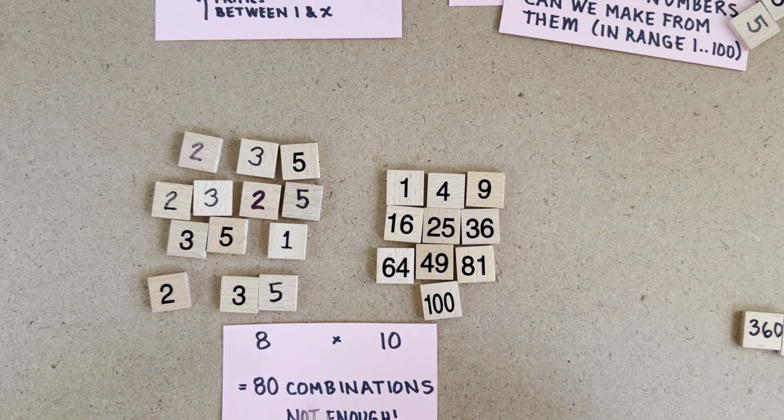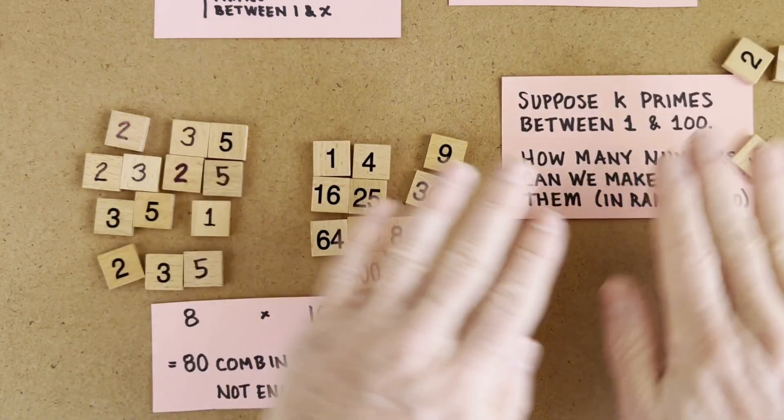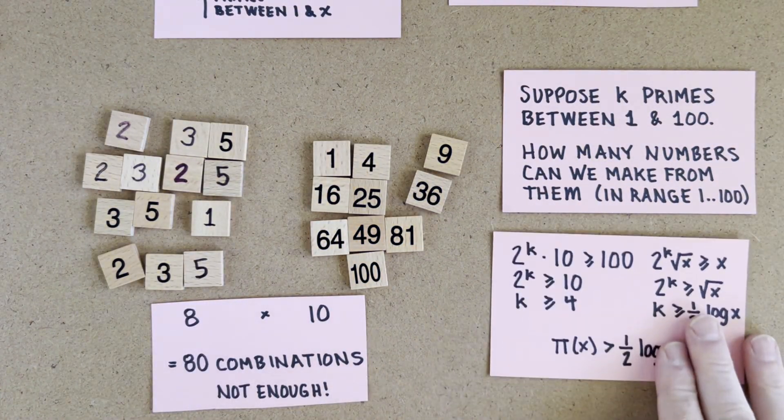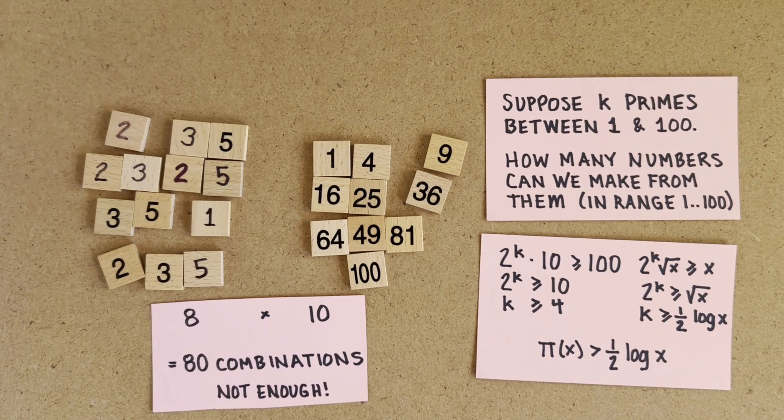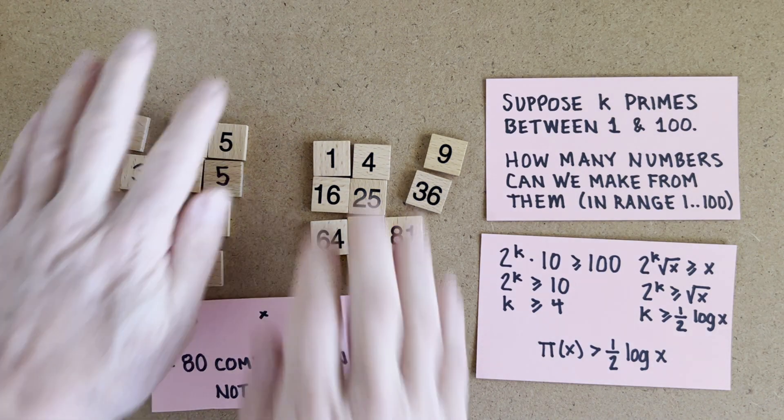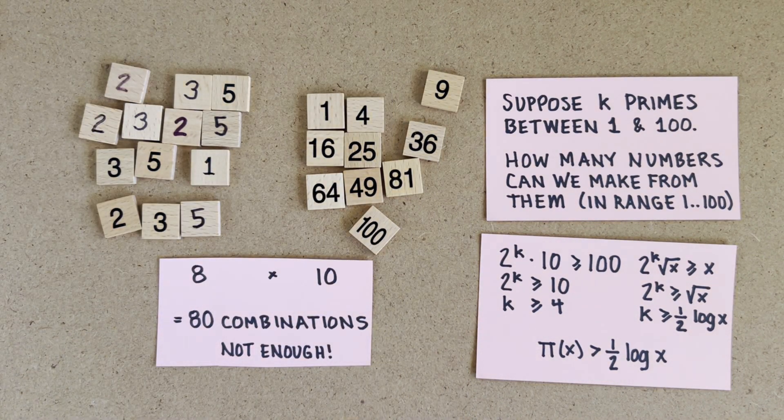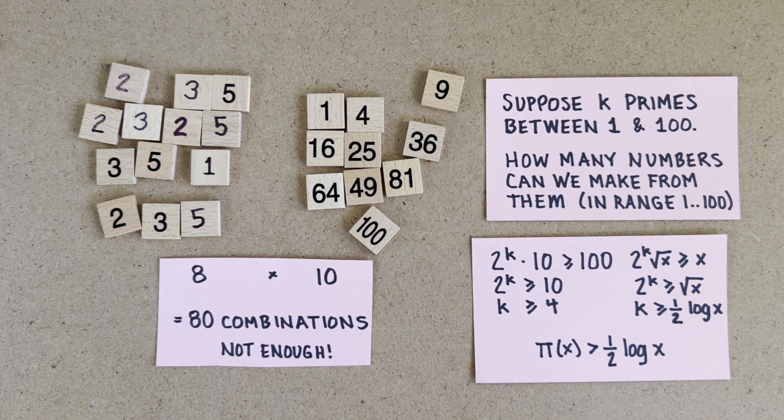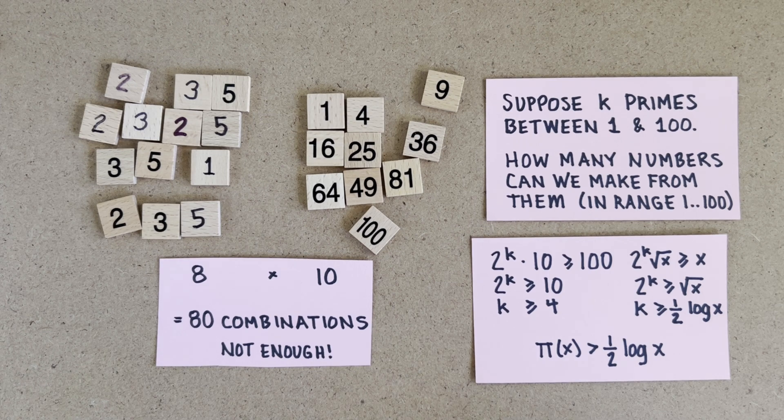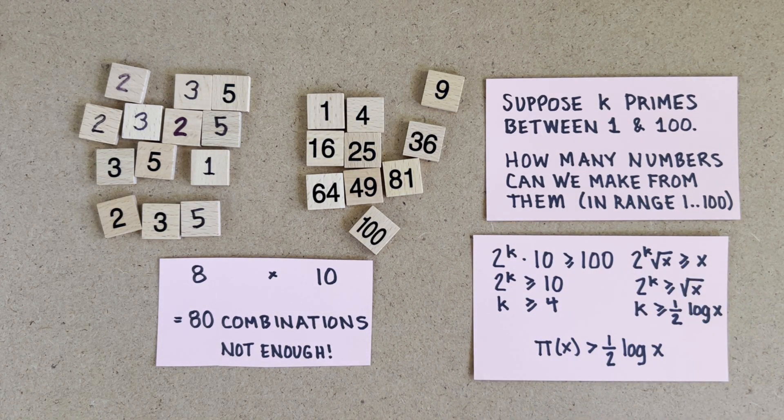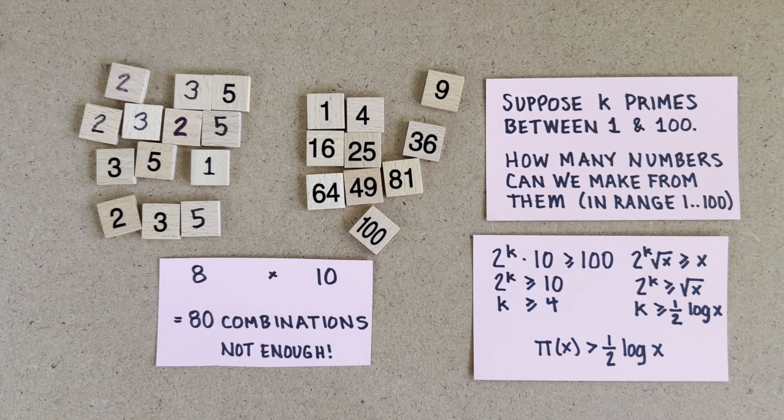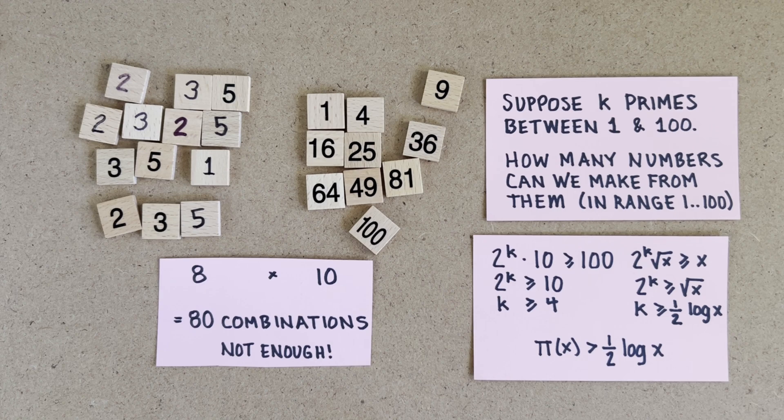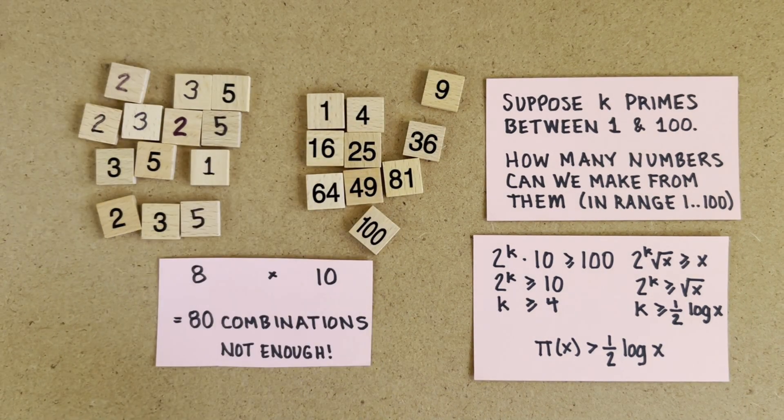Now to be able to construct all numbers from 1 to 100, we need 2 to the k times 10 to be greater than 100, or 2 to the k greater than 10, or k greater than or equal to 4. So there are at least 4 primes from 1 to 100, and we can say that for sure without even having to identify any of the 4 primes. And in general, we have 2 to the k times square root of x greater than x. And so π(x) is greater than half of log x, which is a lot better than Euclid's log log x.